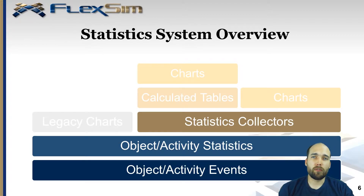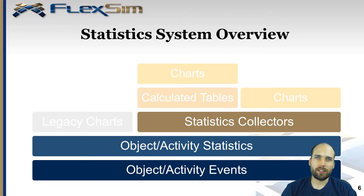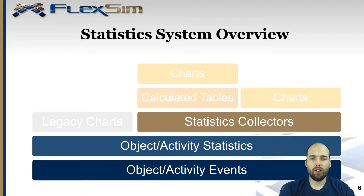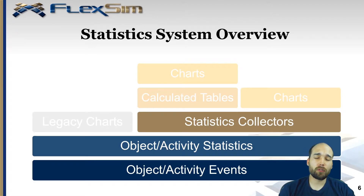The statistics system overview for version 2017 update 2 works as follows. At the very bottom of the hierarchy we have object and activity events — discrete event simulation is all about processing events. Those events drive the object and activity statistics. In the old system, legacy charts worked directly with those statistics. In update 2, statistics collectors help you gather and massage exactly the data you want. From there you can chart that data directly, or use a calculated table to further refine and transform your data, and again point a chart directly at the calculated table.